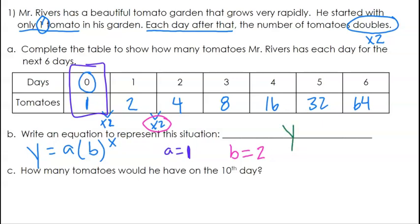So we say y equals a, so that value is one, times b, which is two, raised to the power of x. So now we can use this equation to answer part c. How many tomatoes would he have on the tenth day?